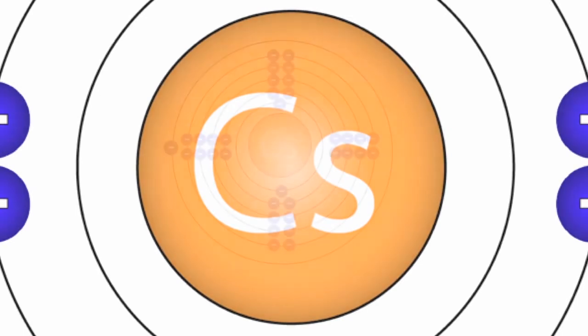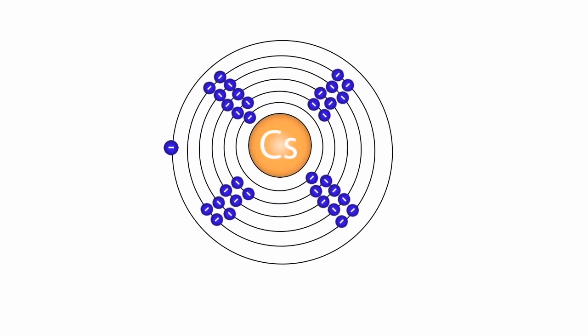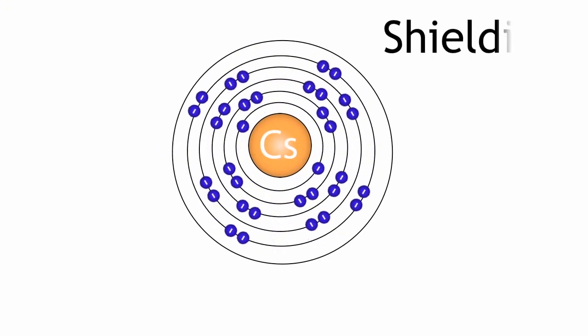But also the electrons in the other shells interfere and stop the nucleus holding on to the electron. This concept is known as shielding.